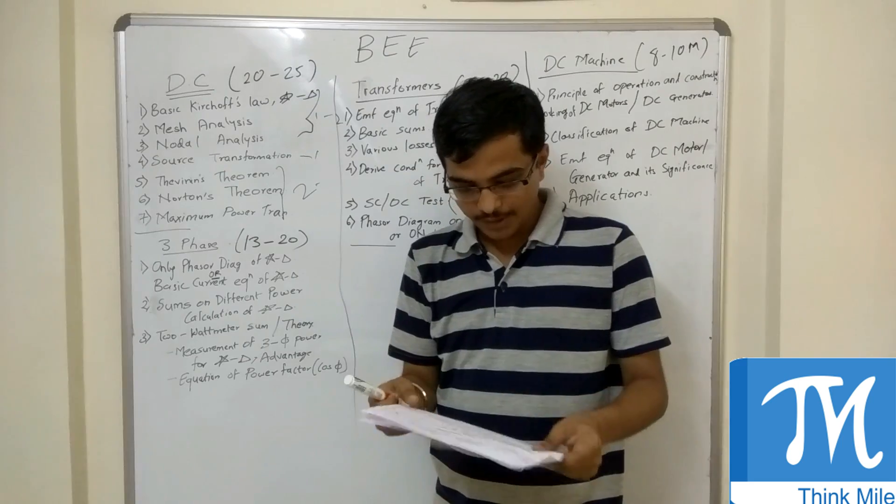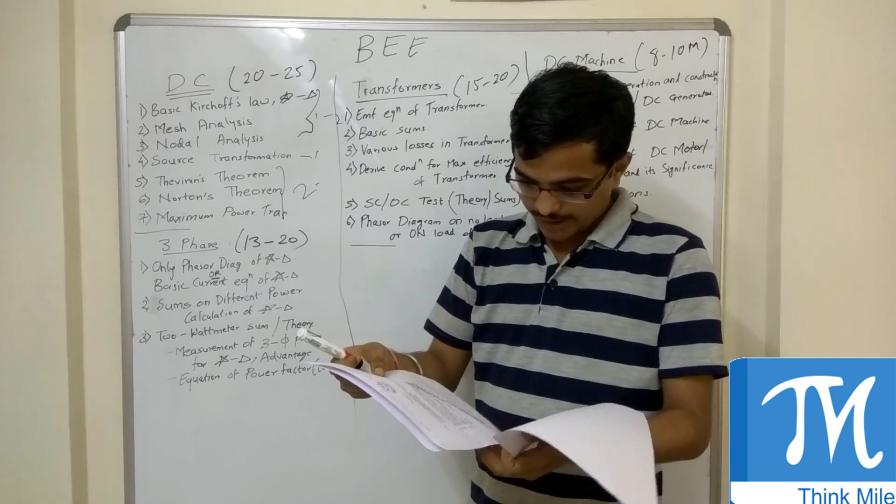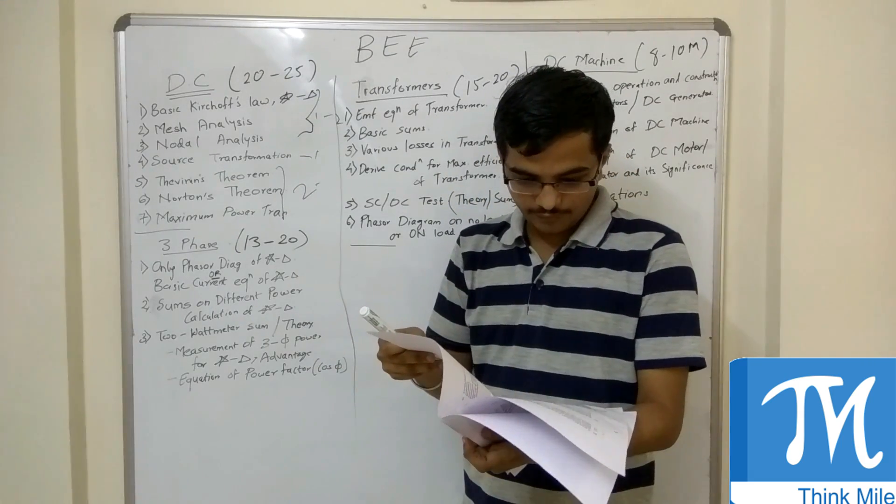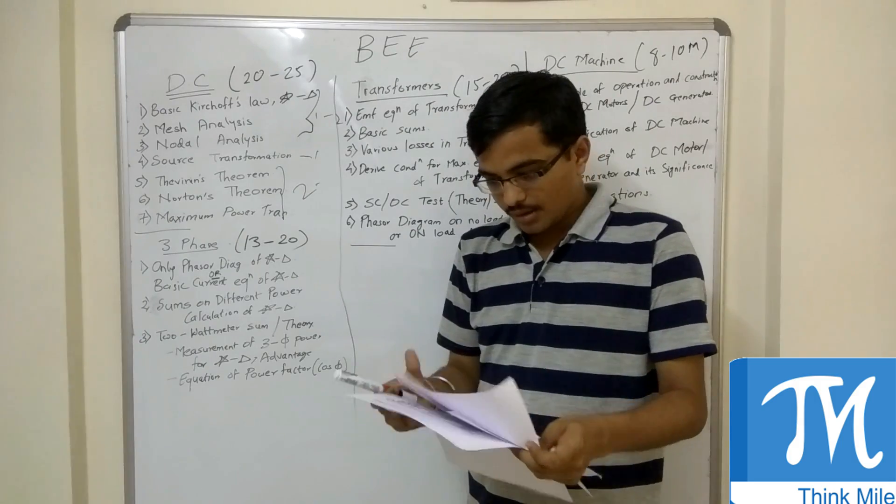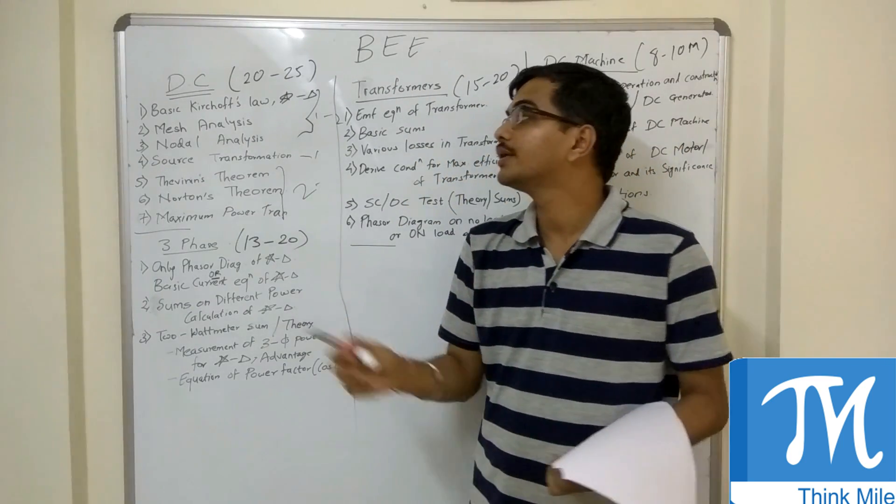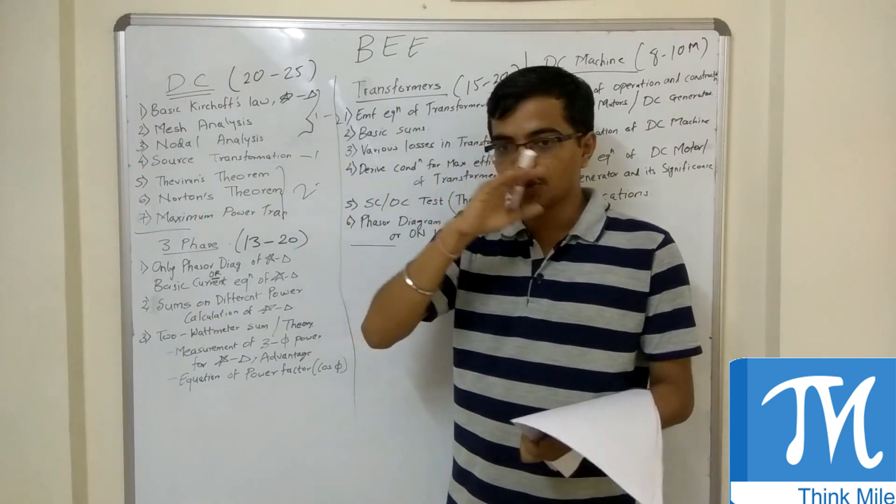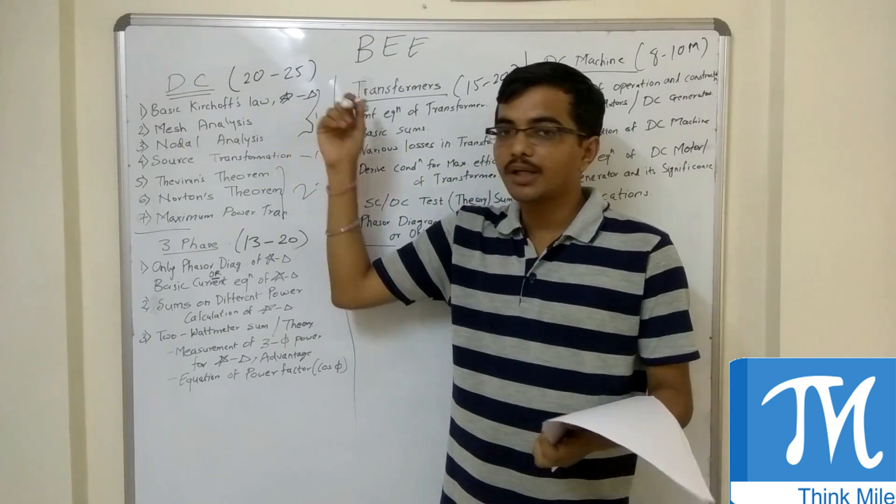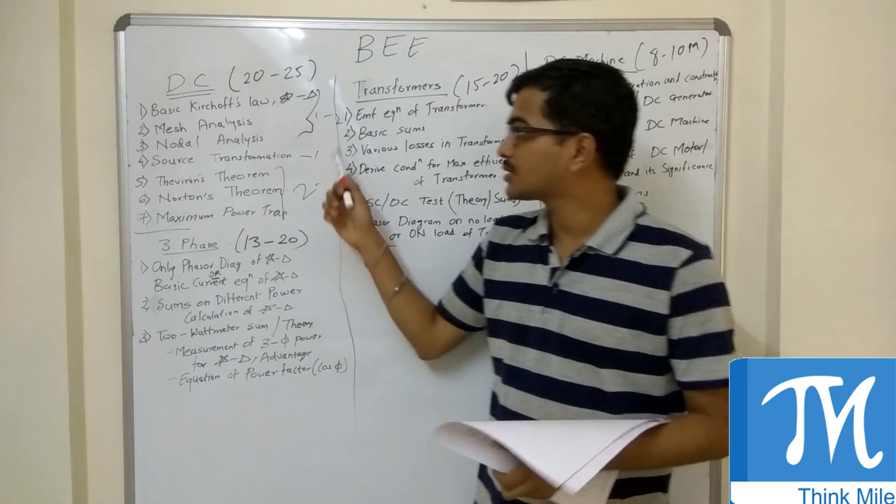Last year in the last paper, there were 46 marks paper on DC but that was with options. So if we don't consider the options, still you can attack the paper of 20-25 marks very easily.